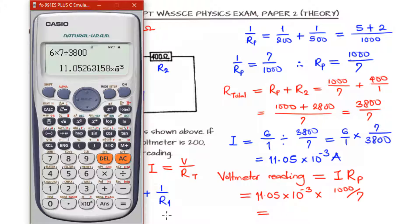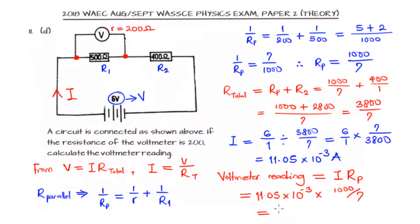So if we bring in our calculator, just our initial answer multiplied by 1000 divided by 7, so that is 1.578 or 1.58 volts. So that's 1.58 volts, and that's the solution to our problem.